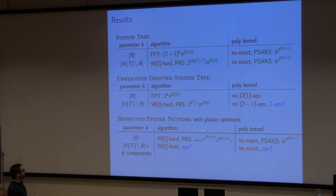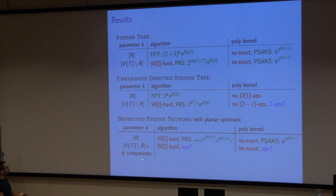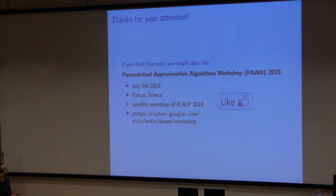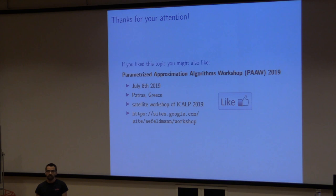To wrap up: these are the results summarized in tables. For the bidirected planar Steiner Forest, we get a parameterized approximation scheme with a terrible running time that didn't even fit on the slide, and we get a PSAKS. If you like the topic of parameterized approximations, there's going to be a workshop at ICALP — please come by. Thanks for your attention.